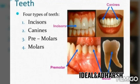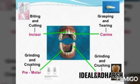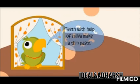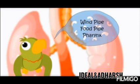Incisors are for biting and cutting. Canines are sharp and pointed to cut food. Premolars are for grinding. Molars are the same as premolars but larger in size. The teeth make food into small pieces and grind it. When you chew your food, it breaks big pieces into small pieces that are easier to digest and swallow. Saliva gets added to the food and the food becomes a thin paste.